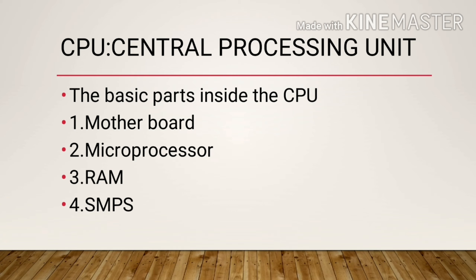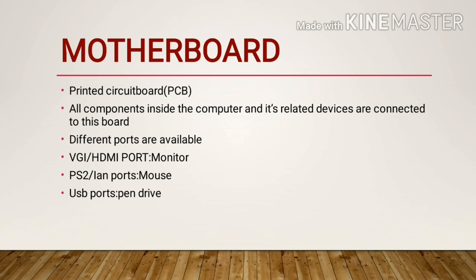First we are discussing the important parts inside the CPU. First one is motherboard, second one is microprocessor, third is RAM, and the last one is SMPS. Let us discuss each part. Motherboard — it is a printed circuit board, PCB. This is also known as the main board.